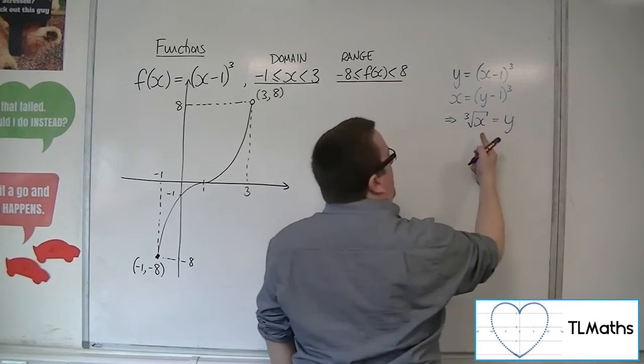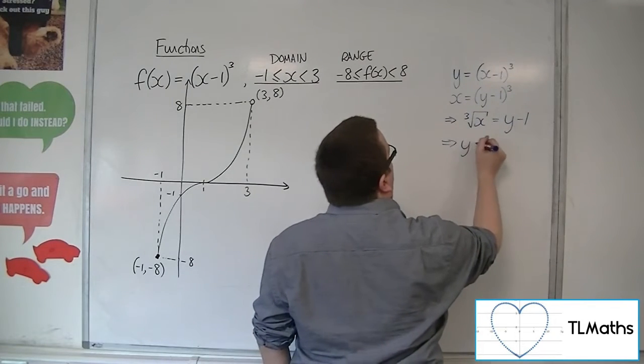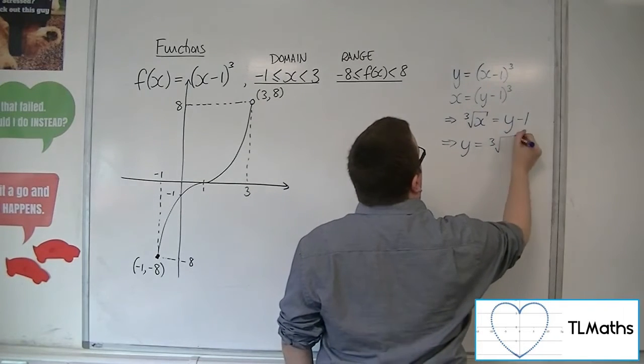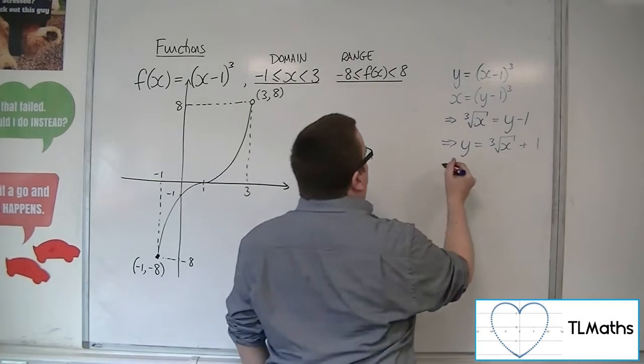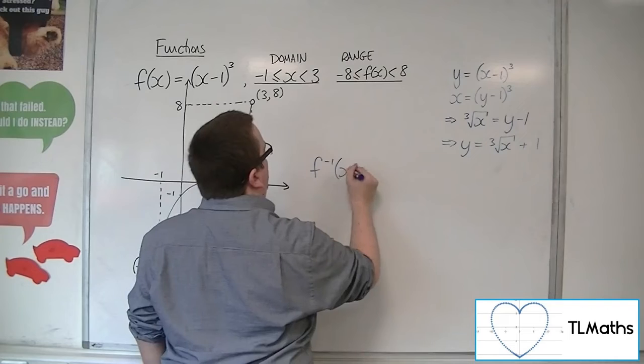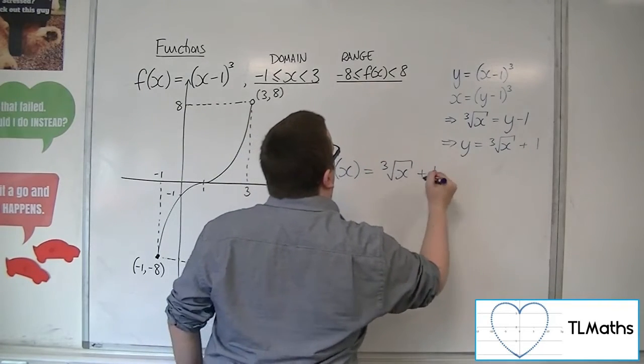We then rearrange this to get y equals. So cube root both sides. So the cube root of x is equal to y minus 1. And then add the 1 to both sides. So y is equal to the cube root of x plus 1. So this is my inverse function. So f minus 1 of x is the cube root of x plus 1.